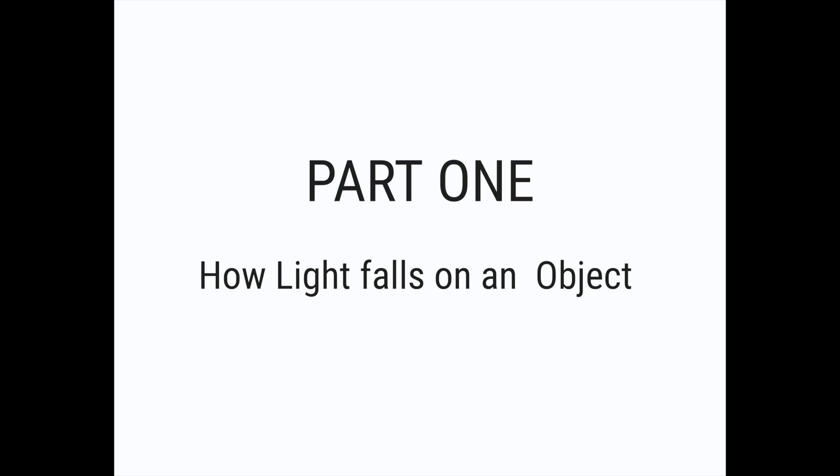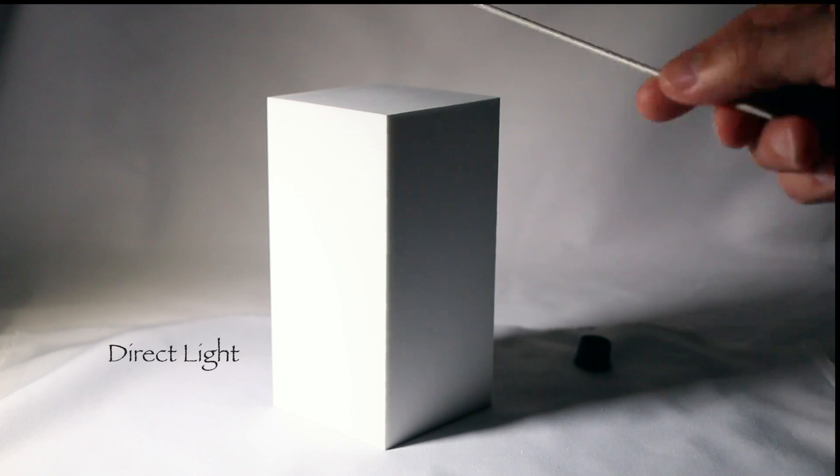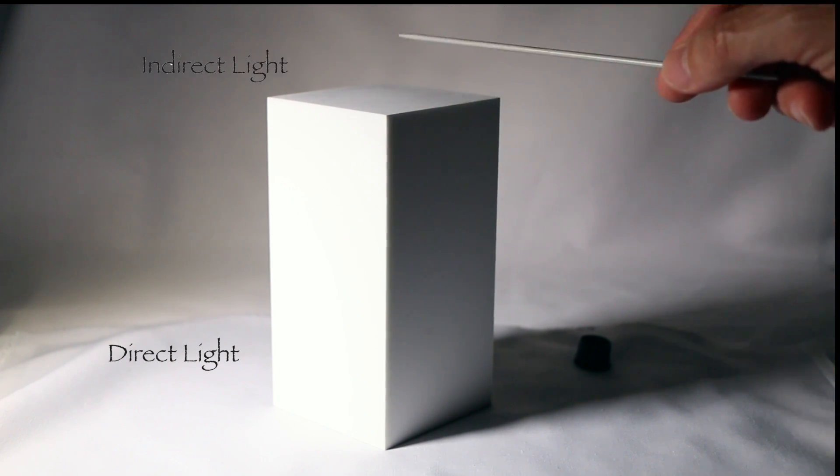Part one, how light falls on an object. In this video we're looking at a four-sided object with really distinct planes and we're going to talk about the terminology we will use around the light. Direct light coming from the left side is hitting the front plane of this object. That's where the sun is shining. Then we have what's called indirect light that's hitting the top plane. That is where the light is coming from the sky. It's not directly from the sun. It's just the light that's bouncing around the space.